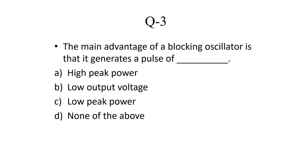The third question is related to blocking oscillator. What is the main advantage of a blocking oscillator? When we studied the properties of a blocking oscillator, we know that a blocking oscillator generates high peak power pulses. The options are: high peak power, low output voltage, low peak power, none of the above. So the correct answer is Option A: high peak power.